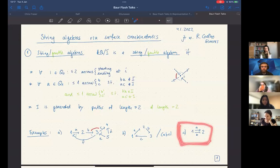Maybe start with C. That's the easiest one is just no oriented cycles at all and no relations. That's a string and a gentle algebra.